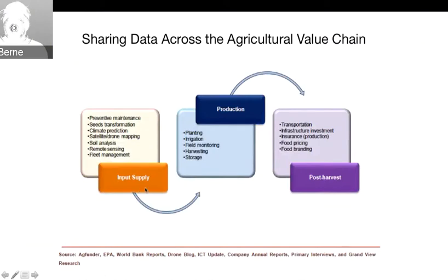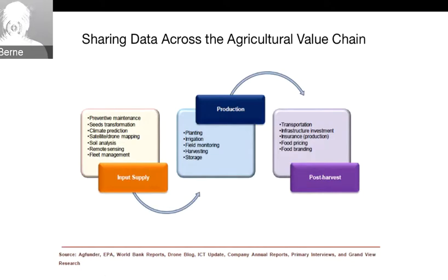That means you have to share data across the value chain — supply inputs, equipment preventive maintenance, seeds, satellite or drone imagery, soil analysis, fleet management, production planning, irrigation, field monitoring, harvesting, and storage. Key activities that people want to integrate data with so that when they get to market and post-harvest they can see what's going on. Transportation, infrastructure investment, insurance, pricing, branding — the market itself is looking for a whole lot more integration than ever before.